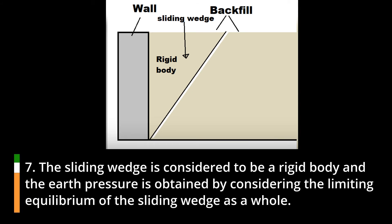7. The sliding wedge is considered to be a rigid body and the earth pressure is obtained by considering the limiting equilibrium of the sliding wedge as a whole.